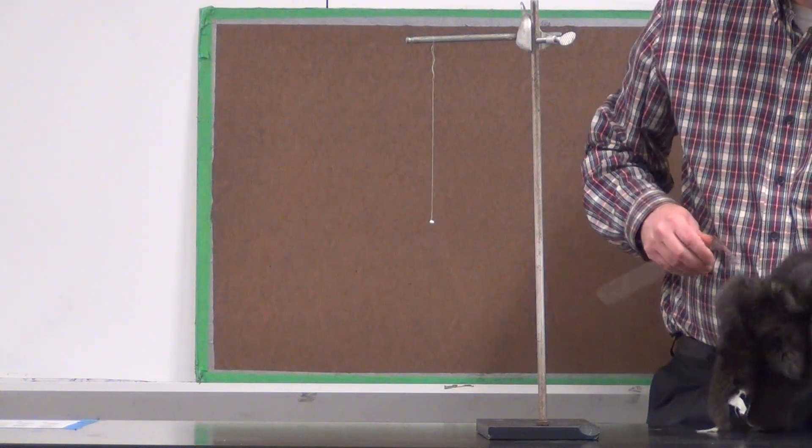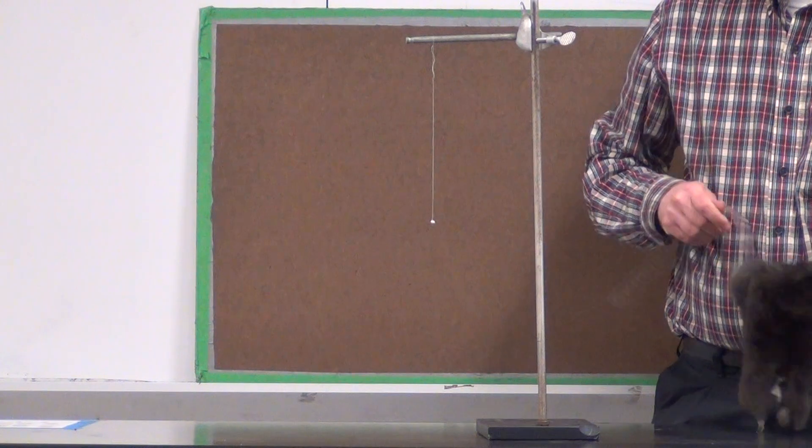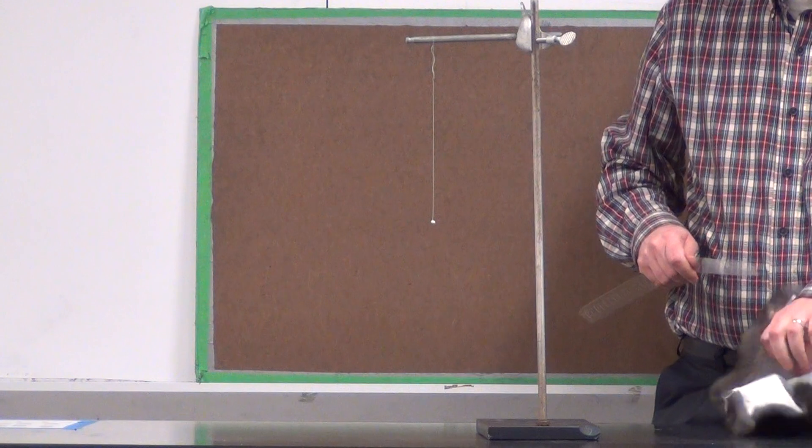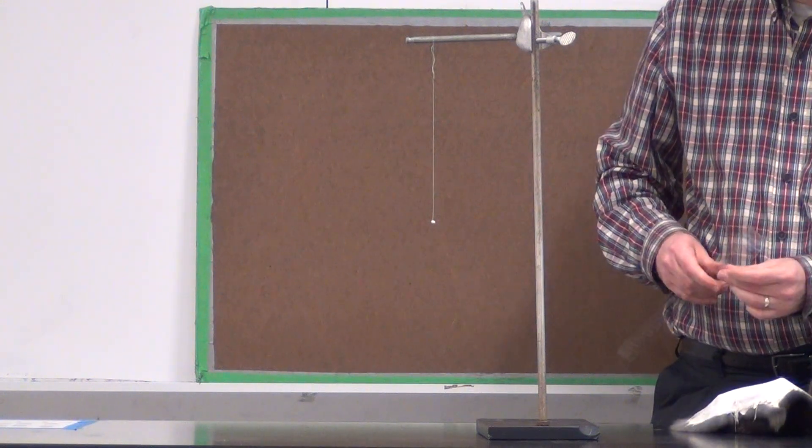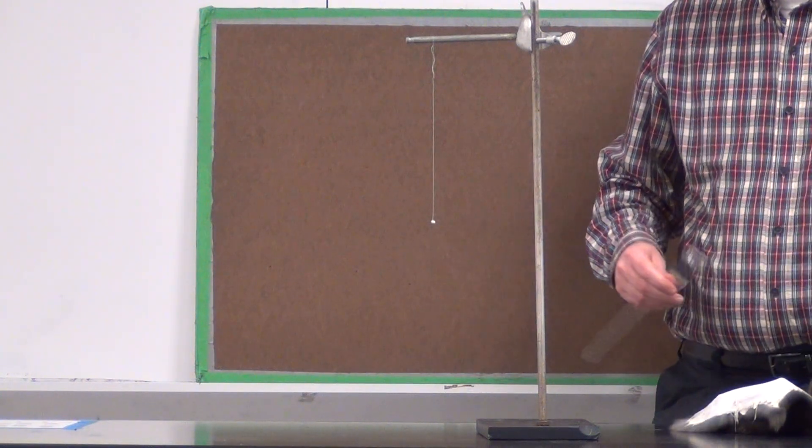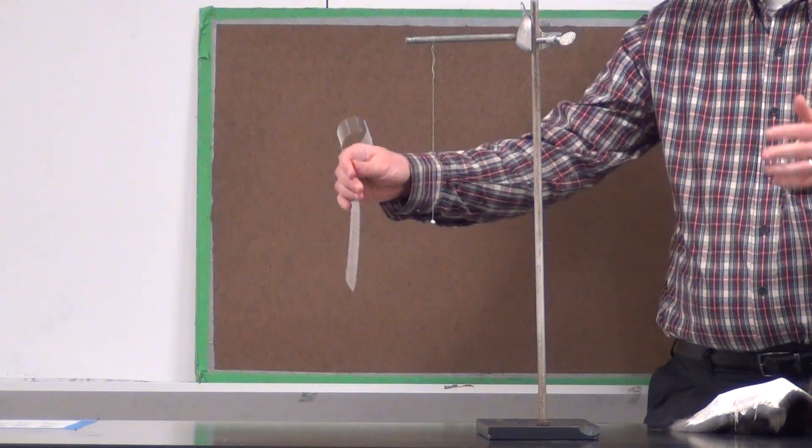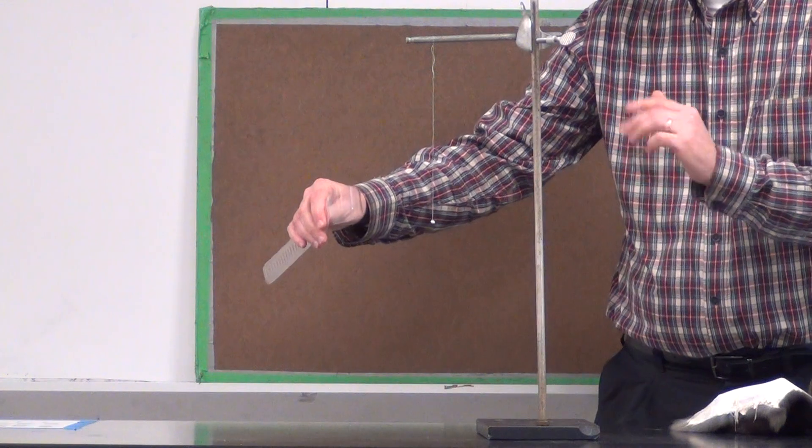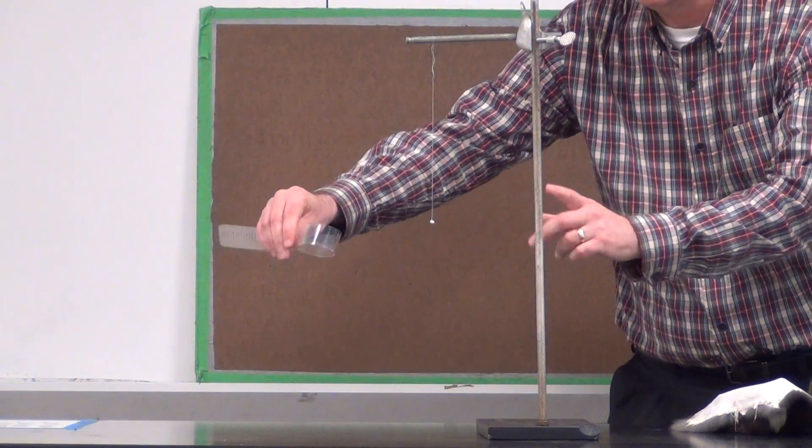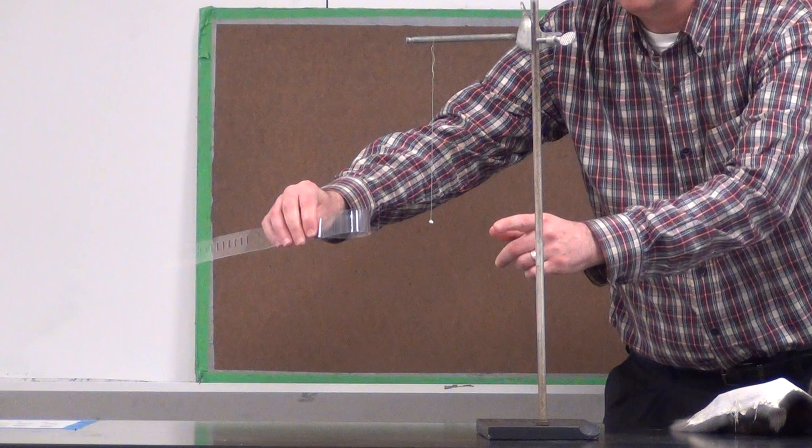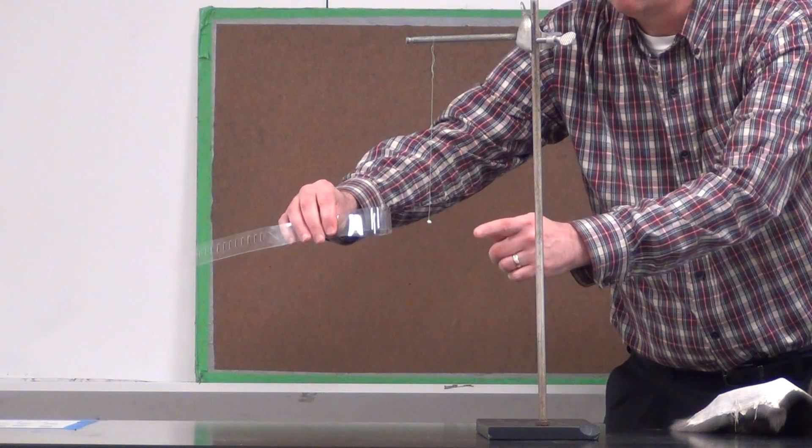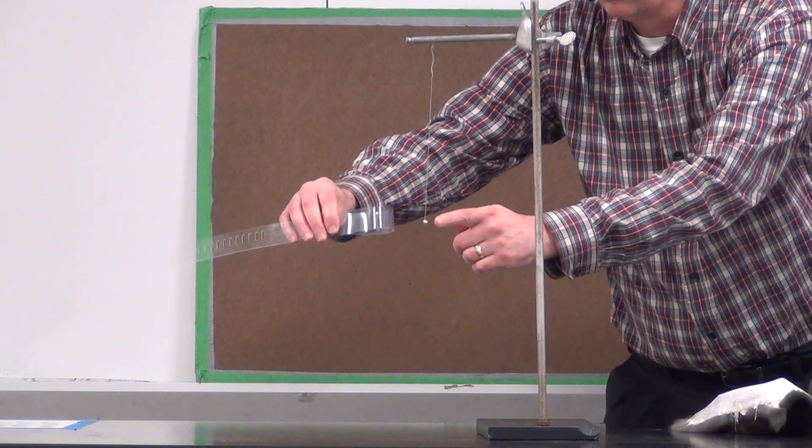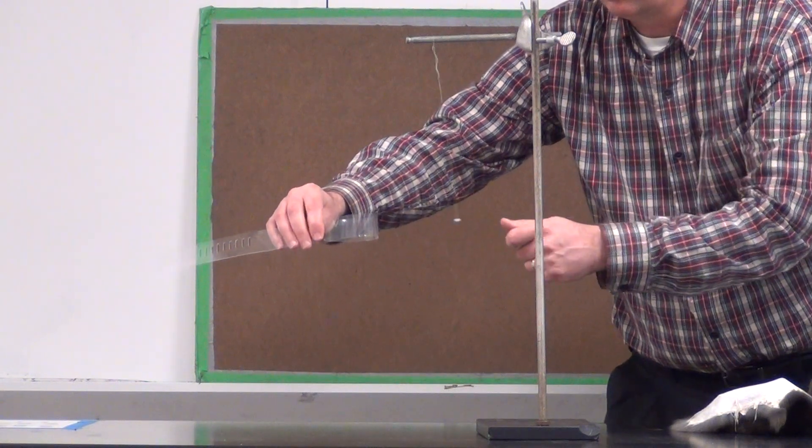Now number two. Again, I'm going to charge my strip. I'm going to bring it close but not touching the aluminum ball. However, while the strip is nearby, I'm going to take my other hand and touch. I'm not going to push the aluminum ball. I'm just going to very gently touch the opposite side of the aluminum ball with my hand. I want you to watch what happens.